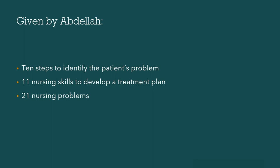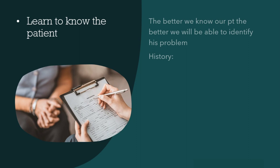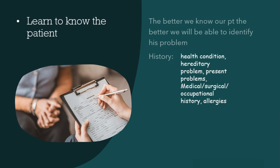The 10 steps to identify the patient's problem are as follows. First is learn to know the patient. The better we know our patient, the better we will be able to identify his problem. When a patient comes to a hospital, our first step is taking history — to know the patient: whether he has any health condition, hereditary problem, what problems he is facing right now, any medical or surgical history, occupational history, allergies. We take a whole lot of data. The objective is to know about the patient.